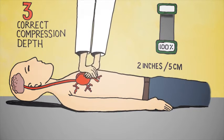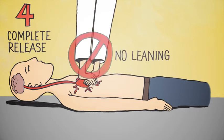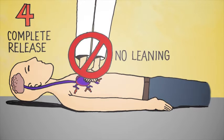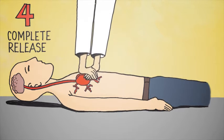On the way down, compressions force blood from the heart into circulation, and most importantly, to the brain. On the way up, full release allows the heart to refill before the next compression.